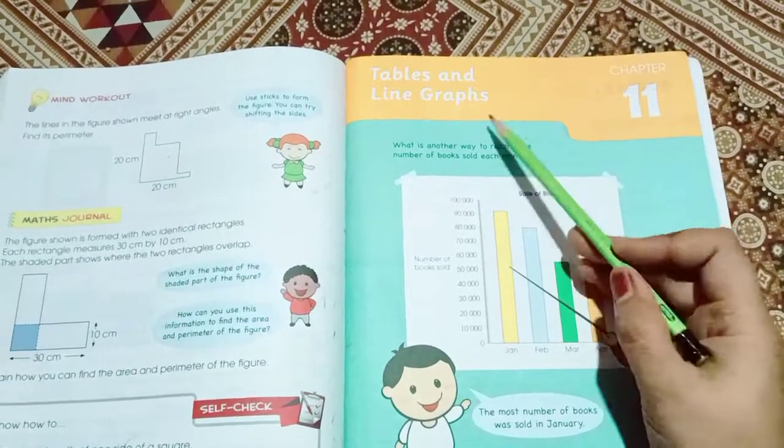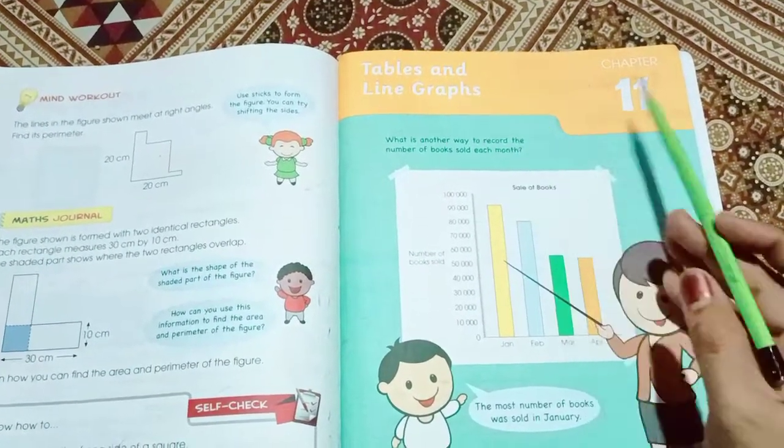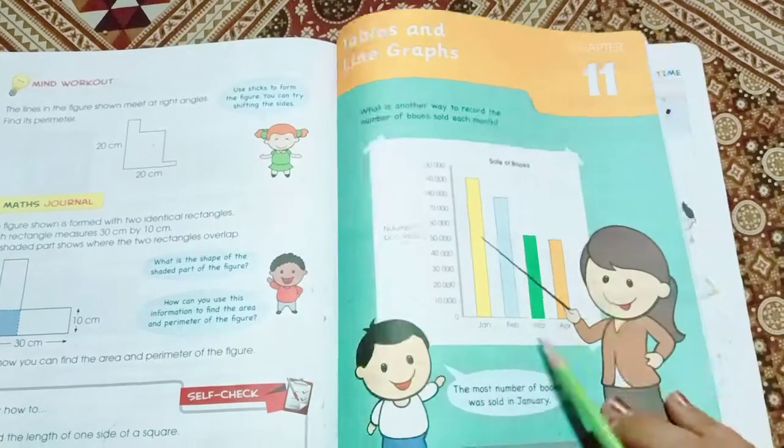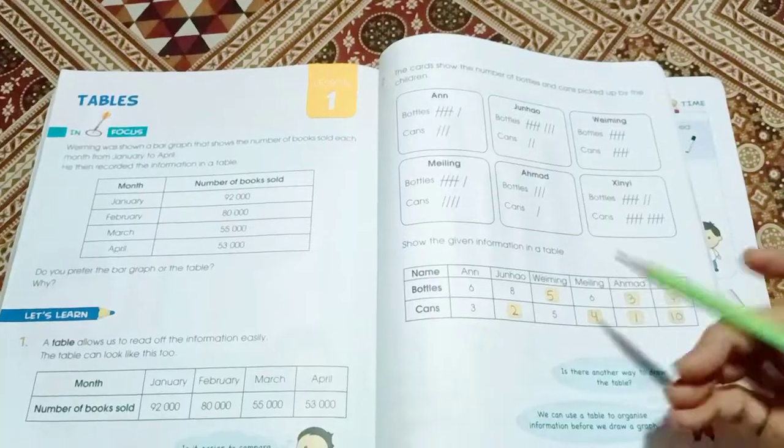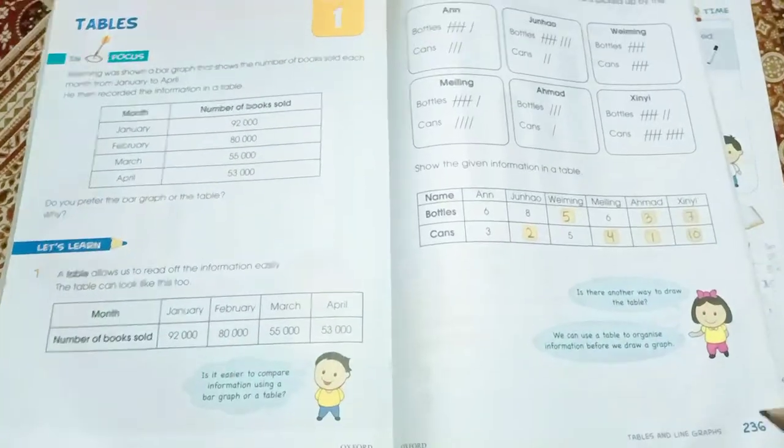Hello everyone, today we are going to start chapter number 11, Tables and Line Graph in book 4. So let's start to solve book 4, page number 236.